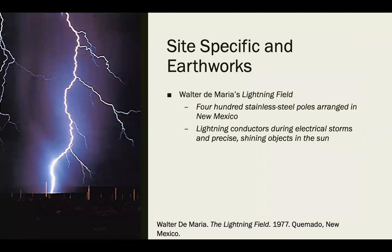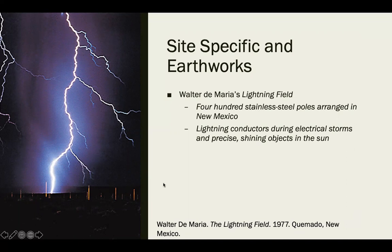Walter de Maria's 'Lightning Field' arranged 400 stainless steel poles in New Mexico. This artist is trying to control something that doesn't lend itself to being controlled — lightning. By organizing these rods knowing lightning will relate to them, he harnesses an extremely chaotic energy, dealing with the dichotomy between chaos and control.